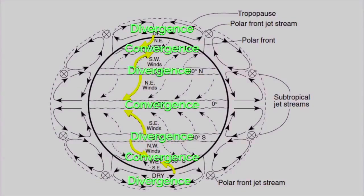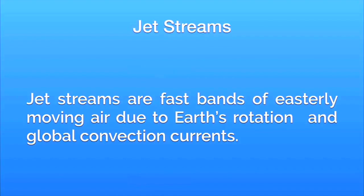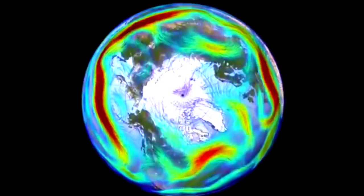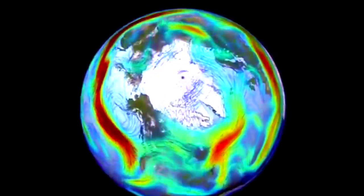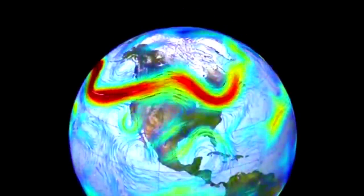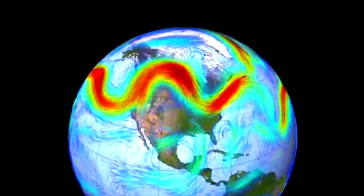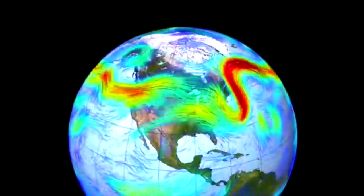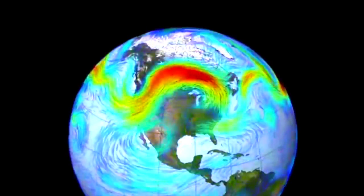Now, why are all these arrows curved? Jet streams are fast bands of easterly-moving air due to Earth's rotation and global convection currents. Here's a look at our northern hemisphere jet stream — notice it's going in a circle around the Earth because the Earth is rotating. Notice it's blowing over the United States, and it's not always in the same shape or pattern — it does break up, break apart, and move and swirl differently.